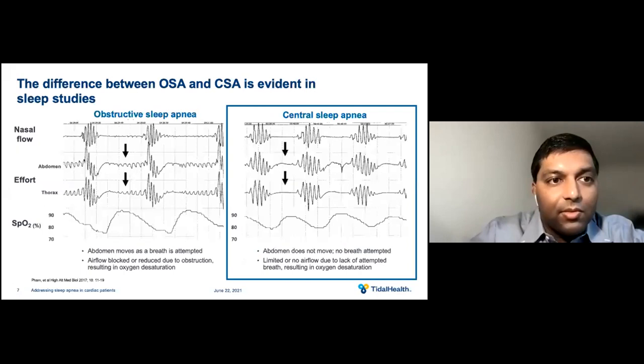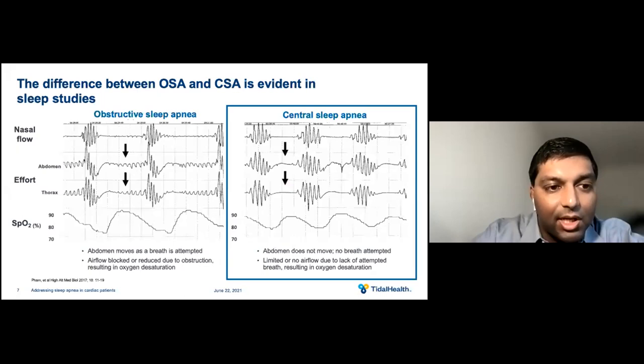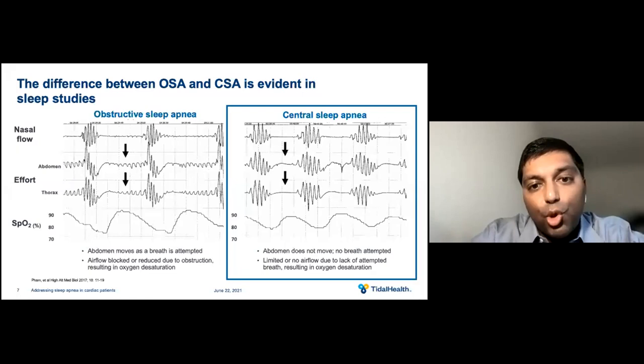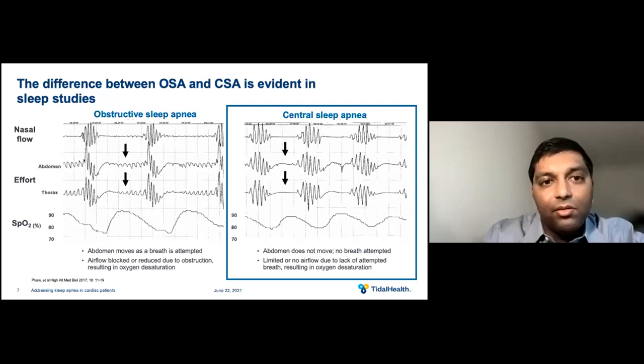What's the difference between obstructive sleep apnea (OSA) and central sleep apnea? We can see this in sleep studies. In OSA, on the left, you can see the abdomen moves as a breath is attempted, and the airflow is blocked or reduced due to an obstruction, resulting in oxygen levels dropping. In contrast, with central sleep apnea on the right, the abdomen does not move, there's no breath attempted, and there's limited or no airflow due to a lack of attempted breath, resulting in oxygen levels dropping as well. Essentially, all lines are flat in central, whereas in obstructive, there's still some effort visible.